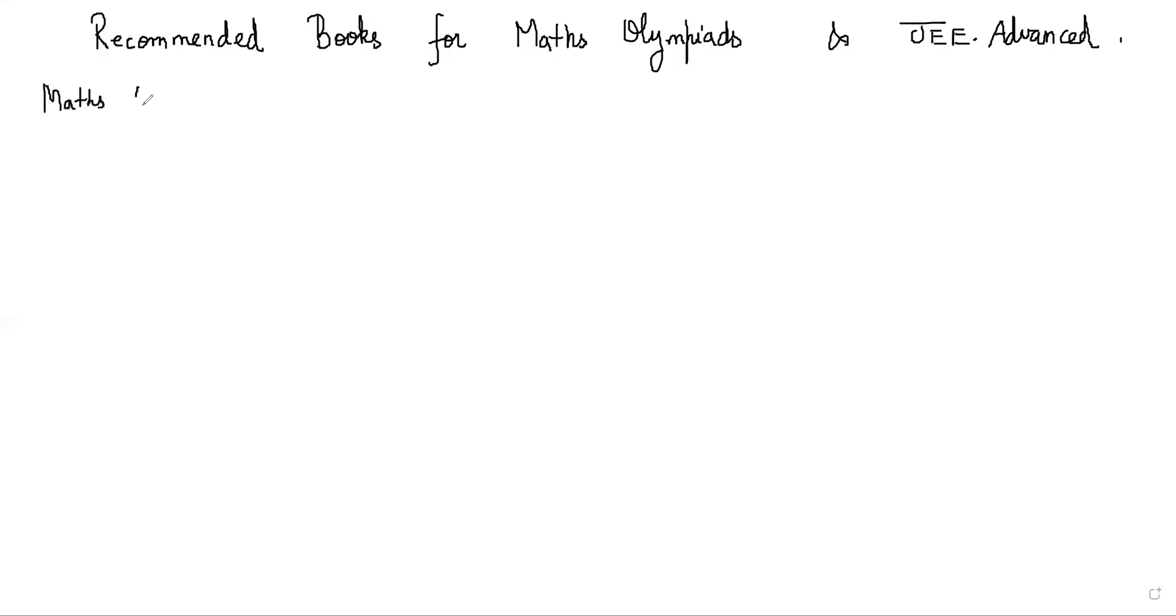As you all are probably aware, the Olympiads test four different topics. One is geometry. I'm going to try to recommend a small number of books for each topic, hopefully three or four books for each topic and nothing more than that. So for geometry, these are my recommendations. One is EGMO by Evan Chen, Euclidean Geometry in Math Olympiads. This is very good.